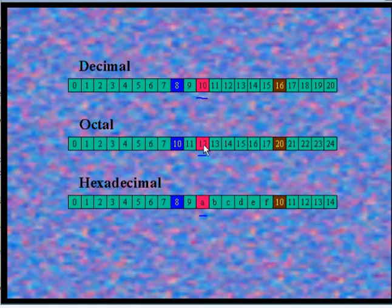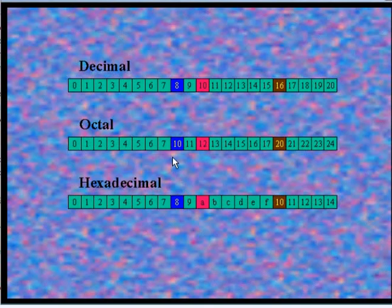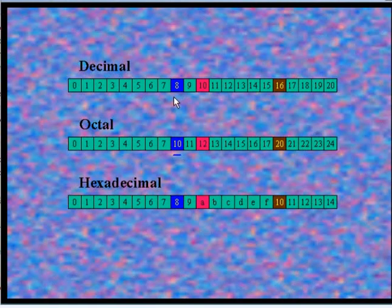In the second case, we assign integer b equal to octal number 10, written as 010. In that case, the equivalent decimal number is 8 and the equivalent hexadecimal number is also 8.